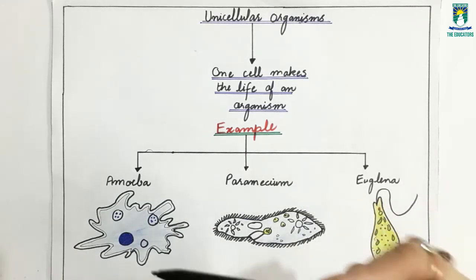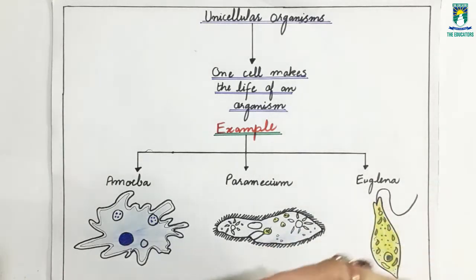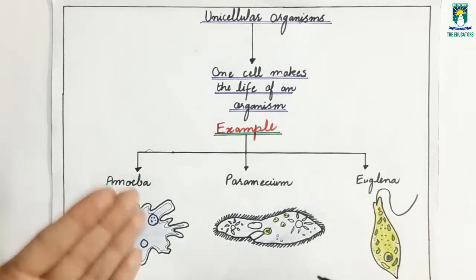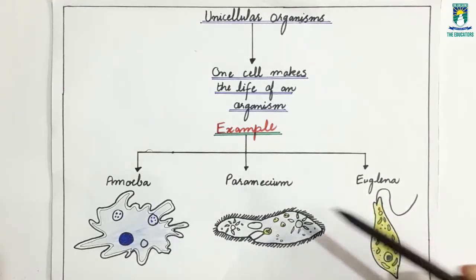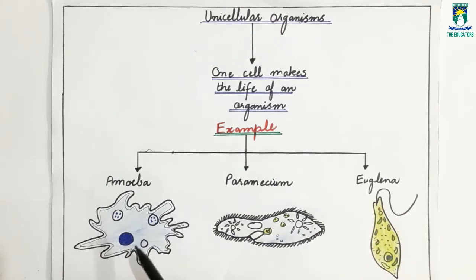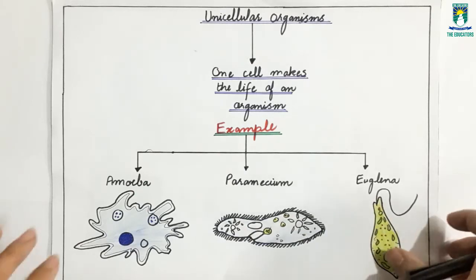It means that all the processes like digestion and excretion are performed by just one cell. Examples of unicellular organisms are amoeba, paramecium, and euglena. Amoeba is a protozoan, paramecium is an alga, and euglena is also an alga.